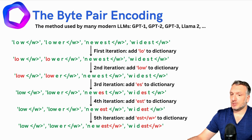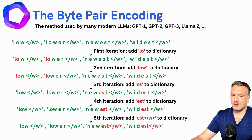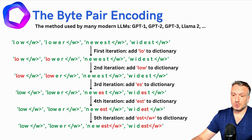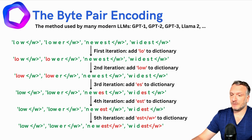The bigger your training data, the more merges you may want to do; the smaller your training data, the fewer merges. For example, GPT-1 has about 40,000 merges. GPT-2, GPT-3, and ChatGPT have about 50,000 merges. LLaMA-2 has about 32,000 merges. This is a hyperparameter you can choose to adjust based on the specific learning task you may have.